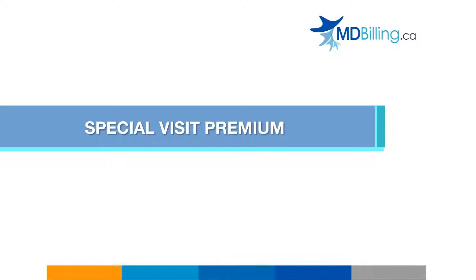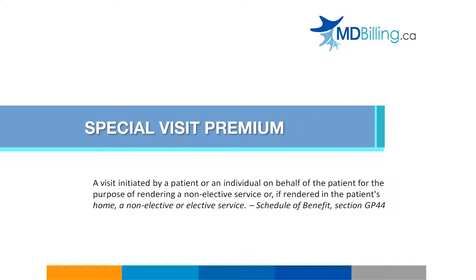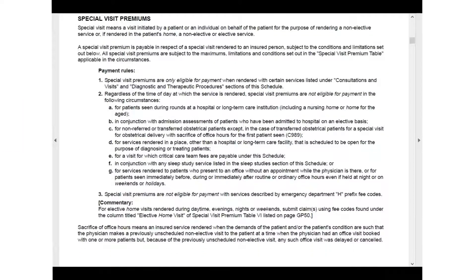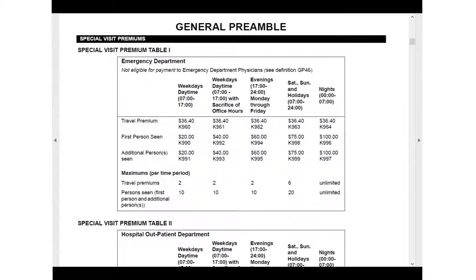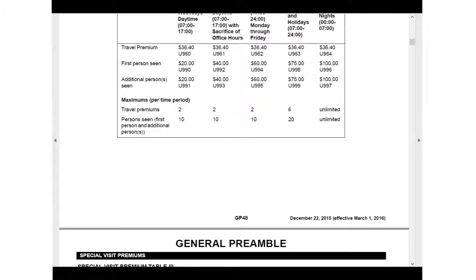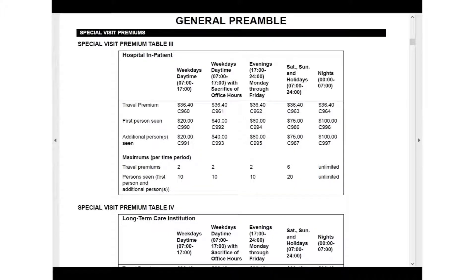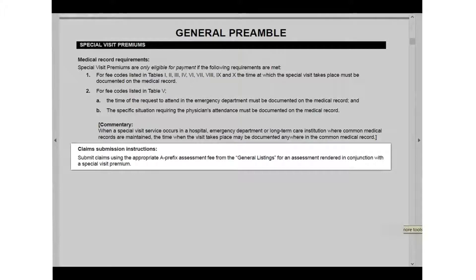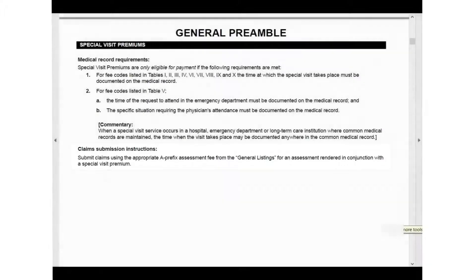A special visit is typically a visit that requires a physician to assess a patient in response to a request initiated by the patient or patient's representative for a non-elective reason. As an example, an urgent care required of a patient due to imminent decline in health. The payment rules for special visit premiums can be found on page GP44 of the schedule. We recommend that you familiarize yourself with these payment rules. The tables outlining the applicable premium codes begin on page GP48 of the schedule. They identify the appropriate eligible fee codes depending upon where services are rendered and by the time of day and/or day of the week or year services are rendered.